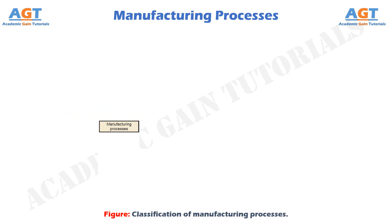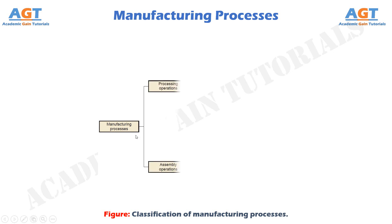Manufacturing processes. A manufacturing process is a designed procedure that results in physical or chemical changes to a starting work material, with the intention of increasing the value of that material. A manufacturing process is usually carried out as a unit operation, which means it is a single step in the sequence of steps required to transform the starting material into a final product.